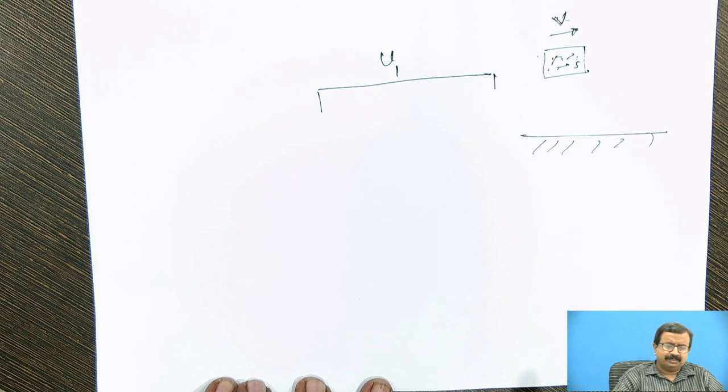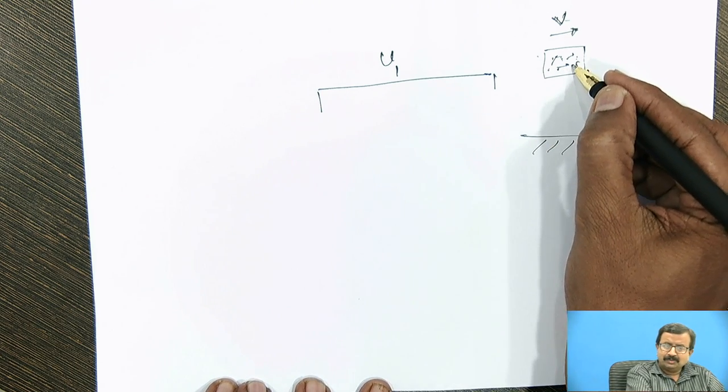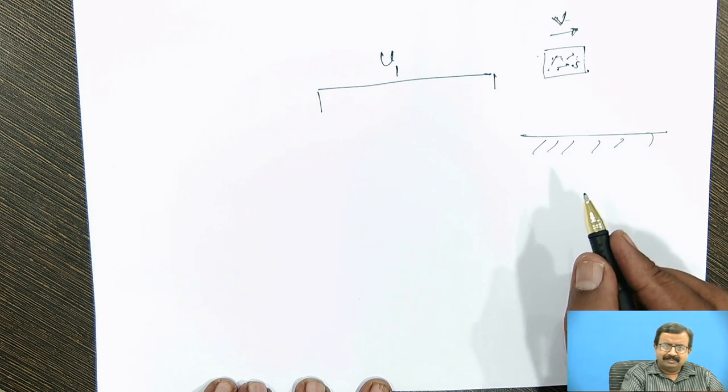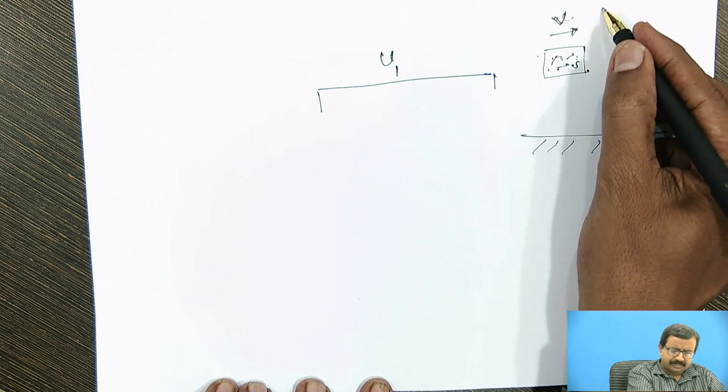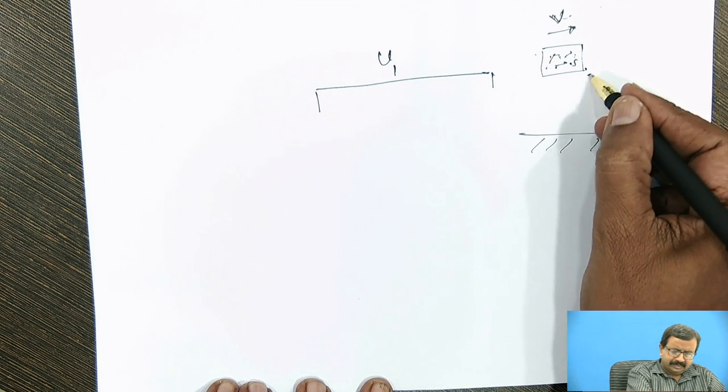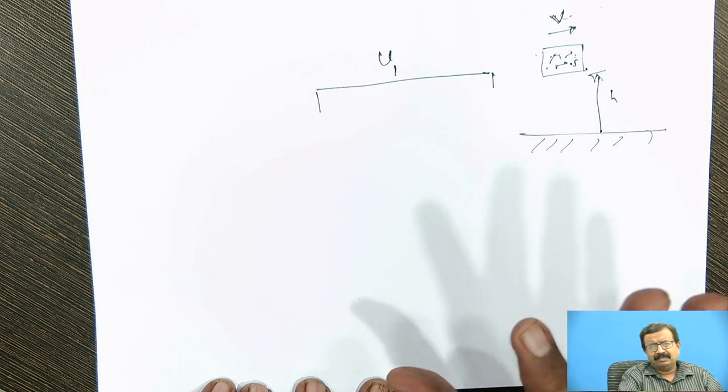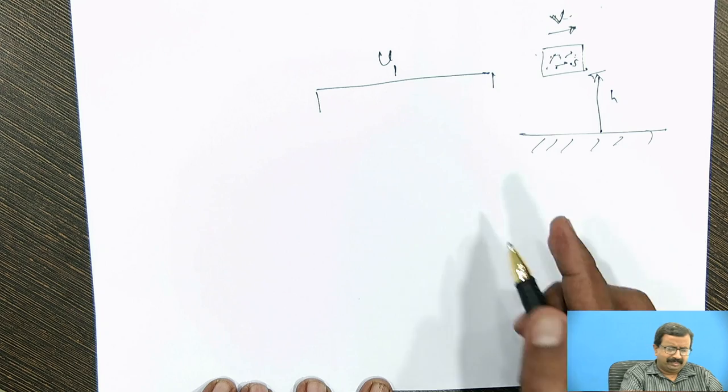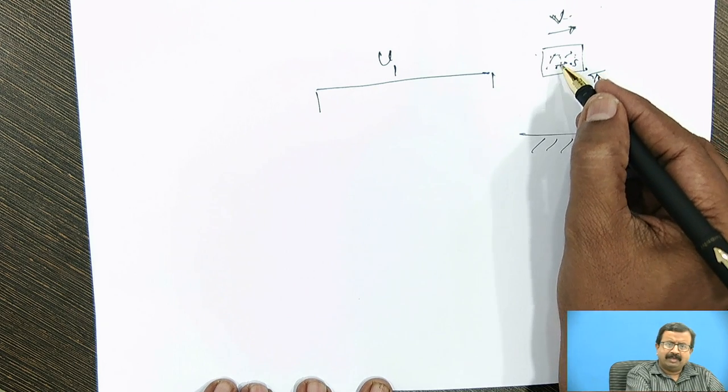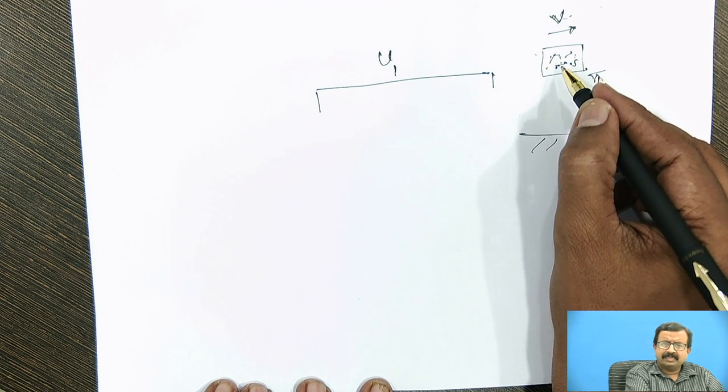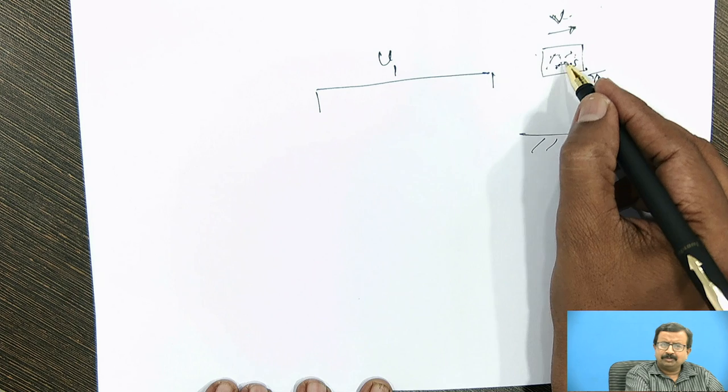So kinetic energy and potential energy of the object in total is different than the kinetic energy, potential energy and vibration energy of the molecules within the system. So you will find a very interesting thing that this kinetic energy, one half mv squared, and the potential energy—suppose this height is h, mgh—has nothing to do with the internal energy of the system.